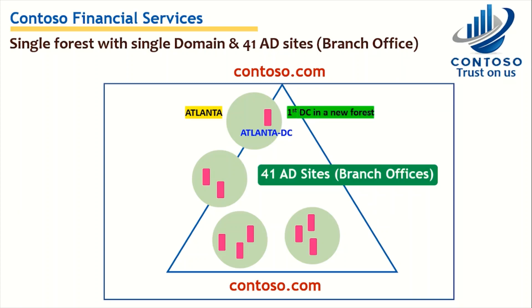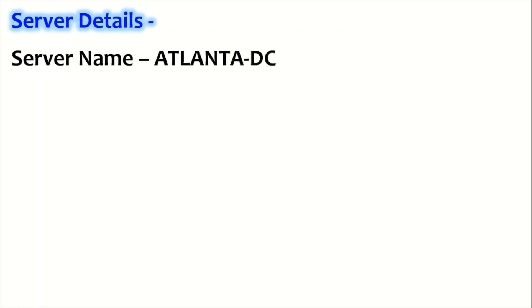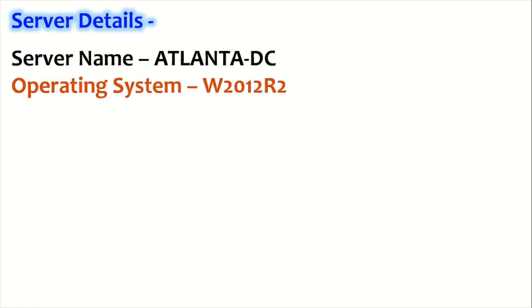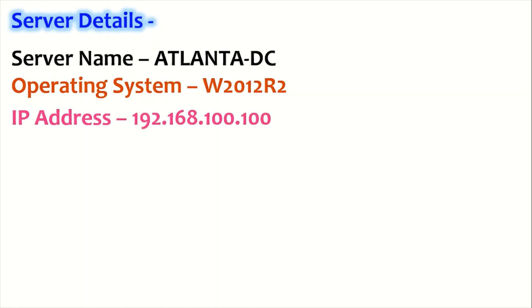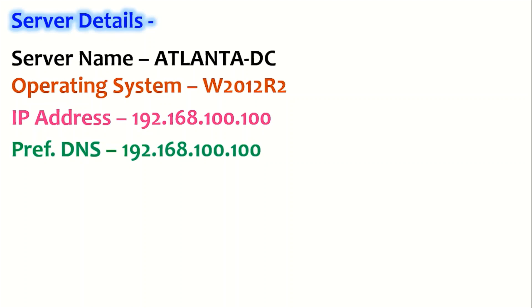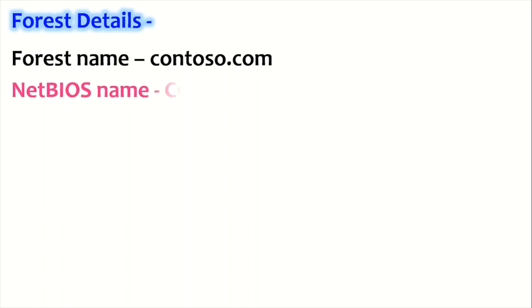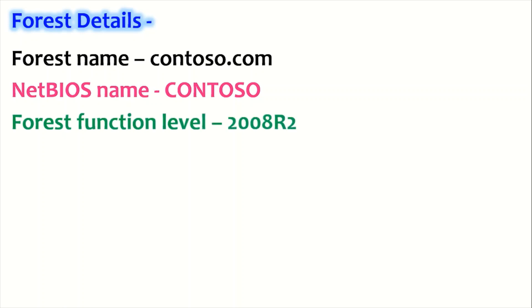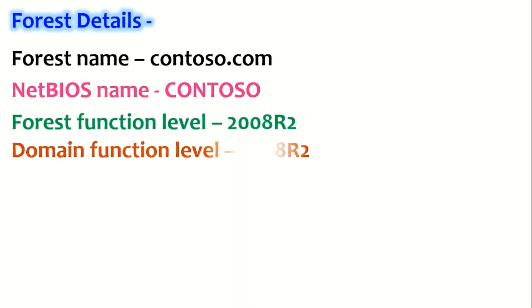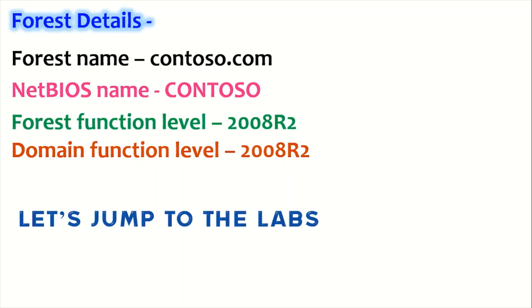We don't have anything right now — we'll be building a new forest for Contoso. The server name is Atlanta-DC, the operating system is Windows Server 2012 R2, IP address 192.168.100.100, and we will be installing DNS as well, so the preferred DNS is 192.168.100.100. The forest name is contoso.com, NetBIOS name Contoso, forest functional level 2008 R2, and domain functional level 2008 R2. We will be discussing Active Directory functional levels in an upcoming session.